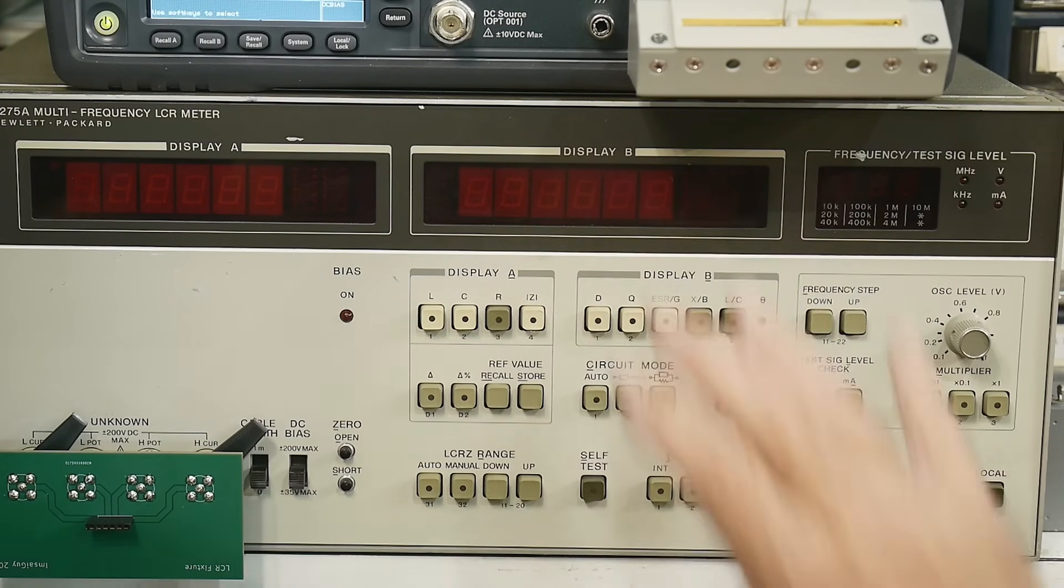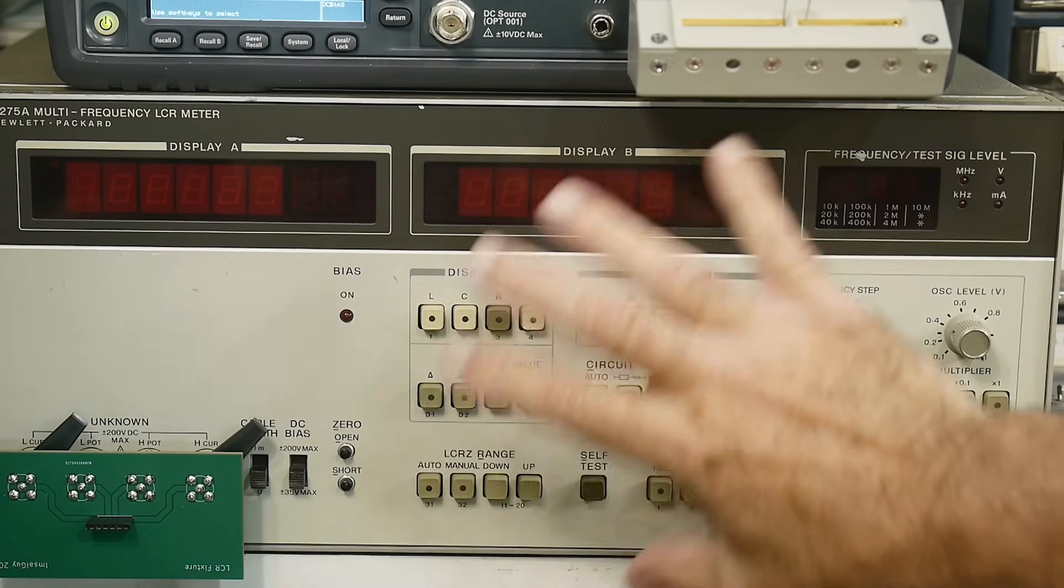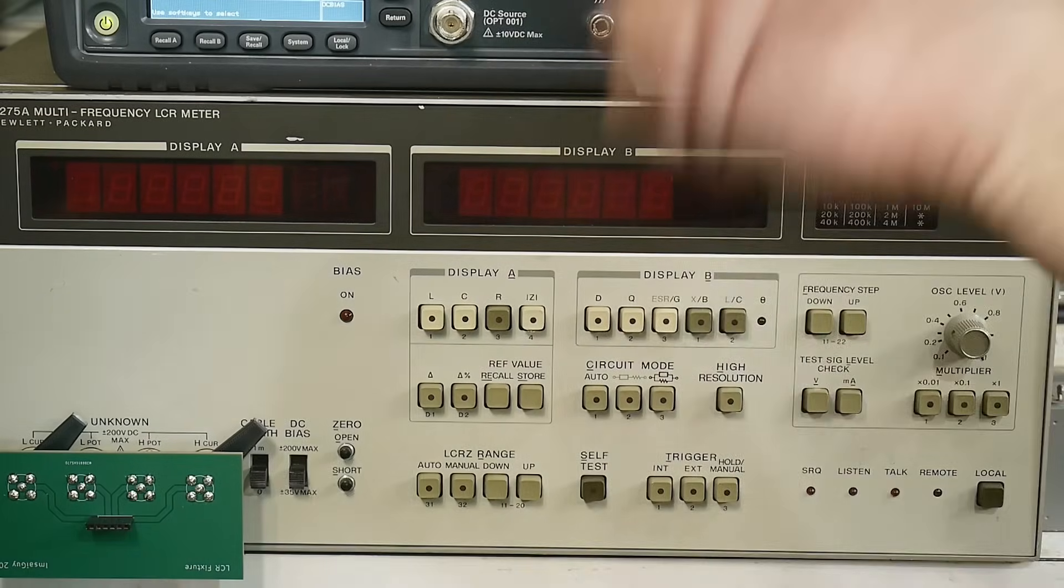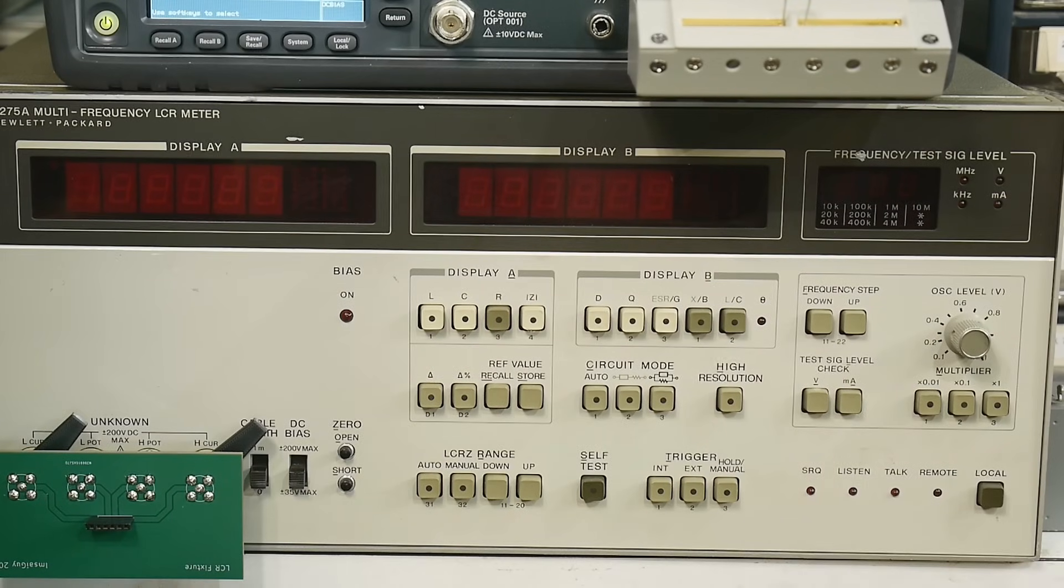So in the days when this was being used, you would write a program with an HPIB control. You would control the power supply and control the measurement device. And you would write a for-next loop and do the whole thing in BASIC and then plot it out. And I'm not going to do that. Maybe someday, I don't know.